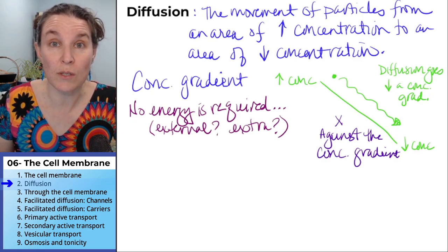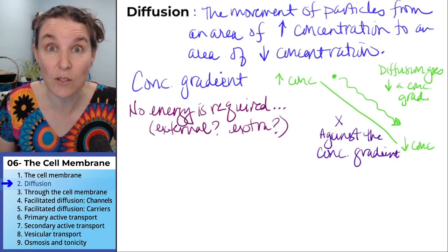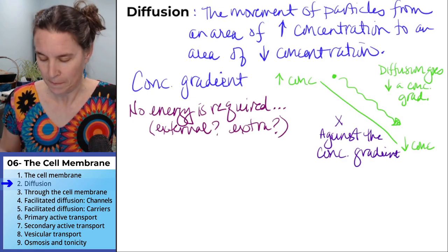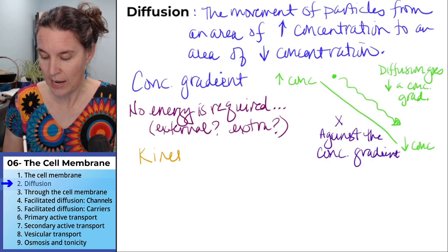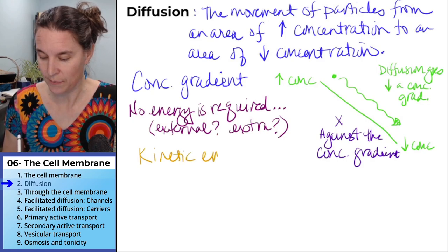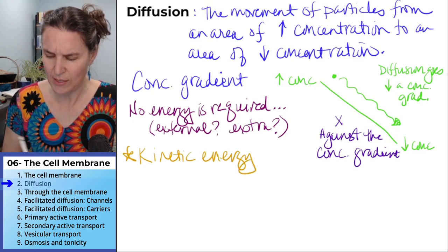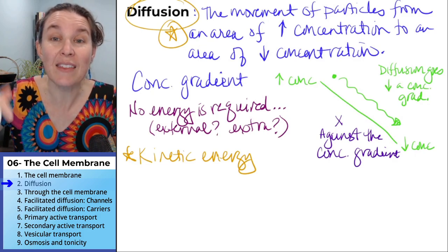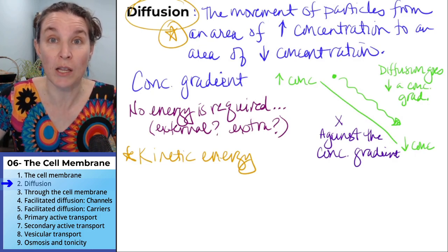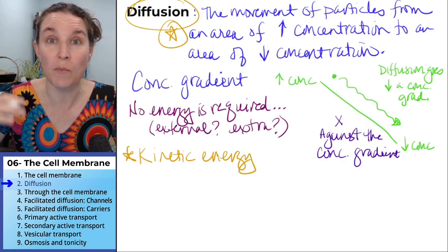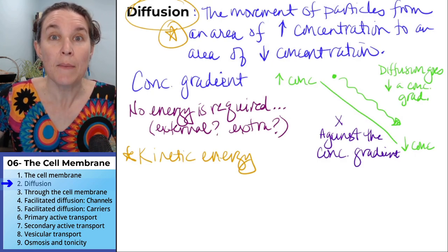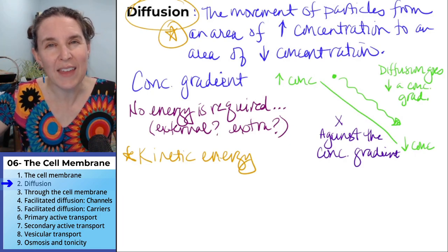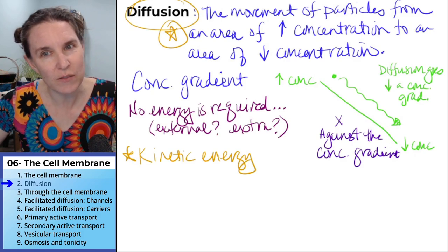The movement of molecules happens because those molecules have energy. Who remembers what kind of energy the molecules have? They have kinetic energy. And put a note somewhere that the diffusion is fueled by the kinetic energy in the molecules. So these molecules are moving around, bouncing off of each other, bouncing off the walls. And that kinetic energy, that movement, is why they go from areas of high concentration to areas of low concentration.